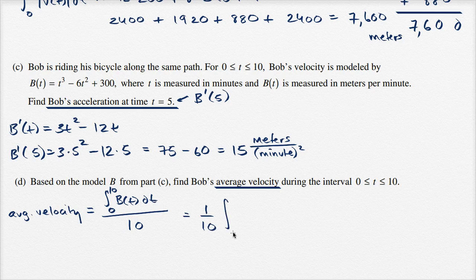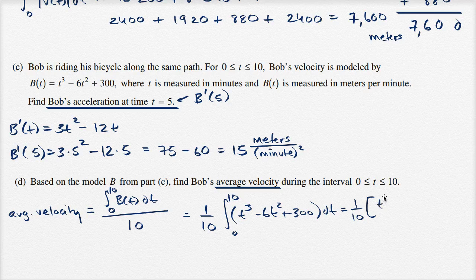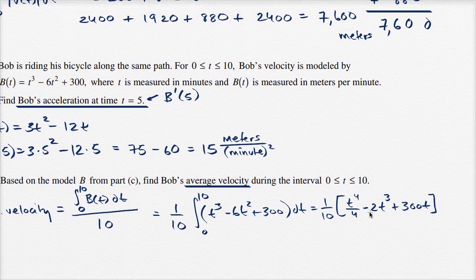So this is going to be equal to one-tenth times the integral from 0 to 10 of b(t) dt, where b(t) = t³ − 6t² + 300. Taking the antiderivative: t⁴/4, then negative 6 divided by 3 gives negative 2t³, and then plus 300t. I'm going to evaluate it at 10 and subtract the evaluation at 0.